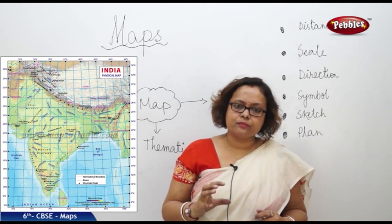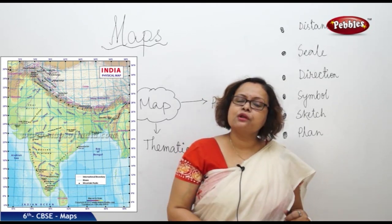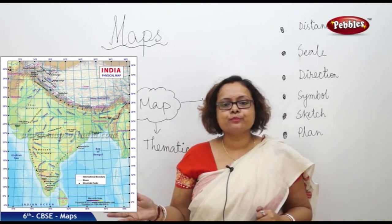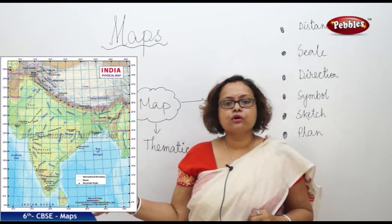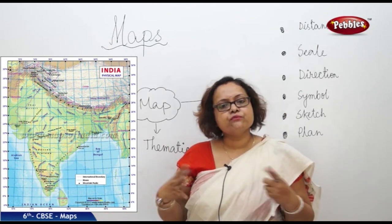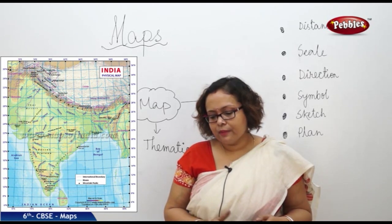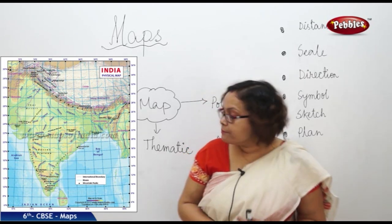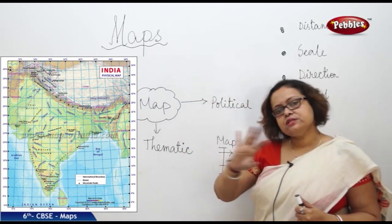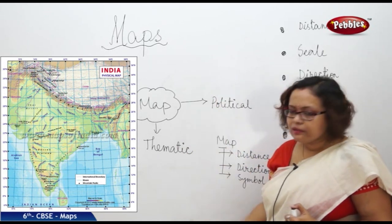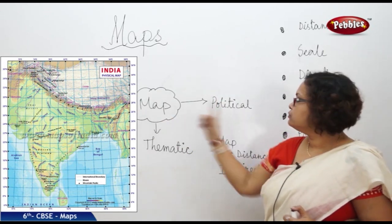We need a map all the time — to know our place, to know a location, to explore something new, to explore a new location. Maps can be of many types, but broadly we can divide them into three types.